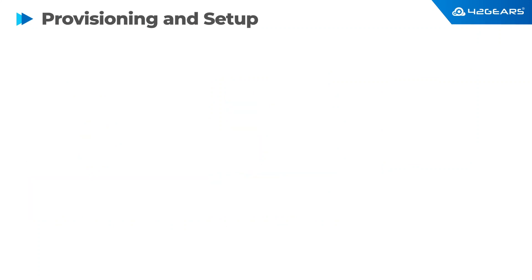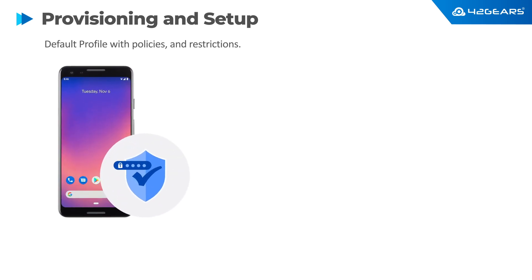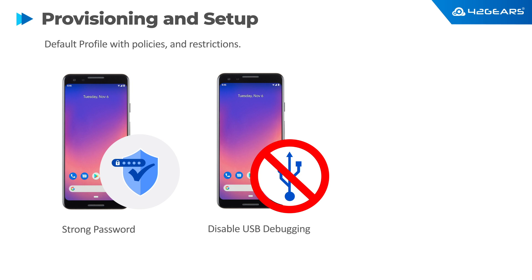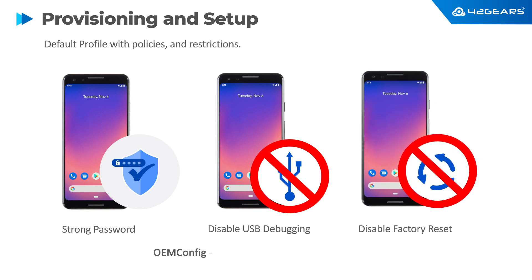During initial provisioning, a default profile with various policies and restrictions can be applied to the devices. An example of such a policy would include enforcing strong password requirements, disabling USB debugging, or factory reset by the end user. Some OEMs also support OEM config, which is a powerful mechanism to configure OEM-specific features of the device.